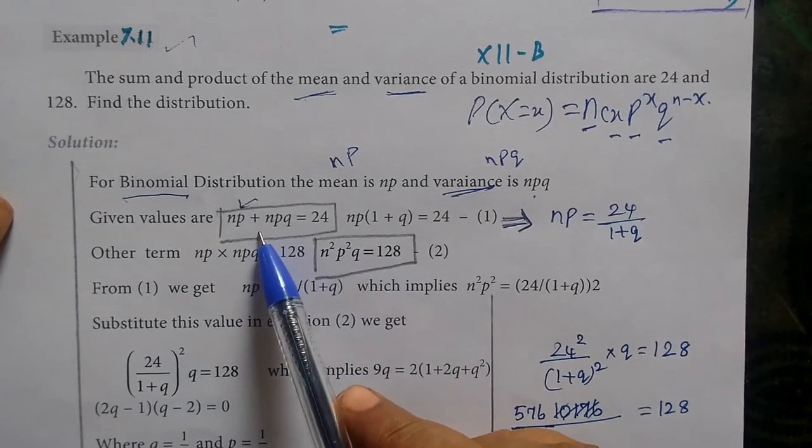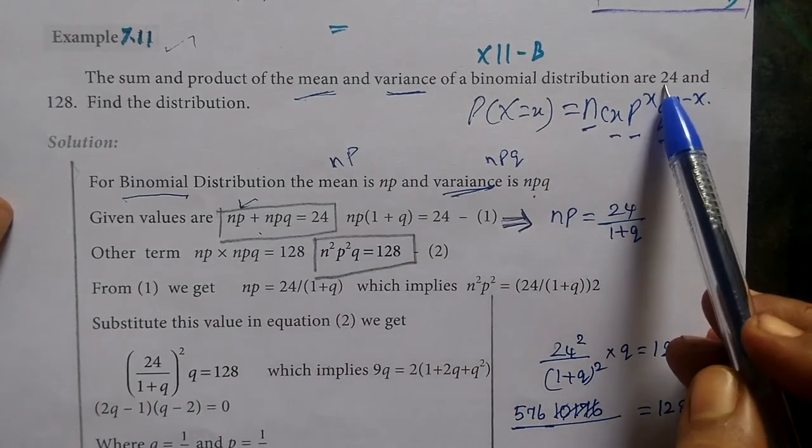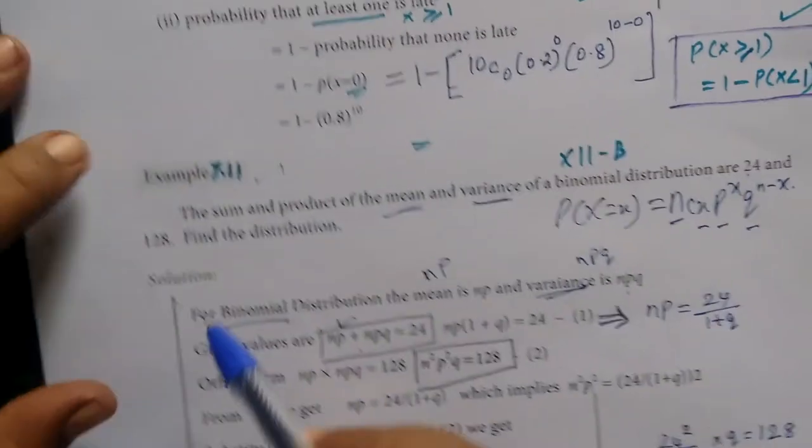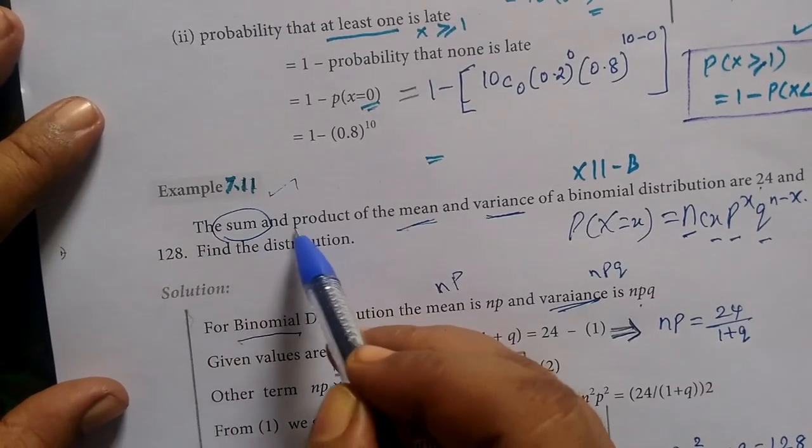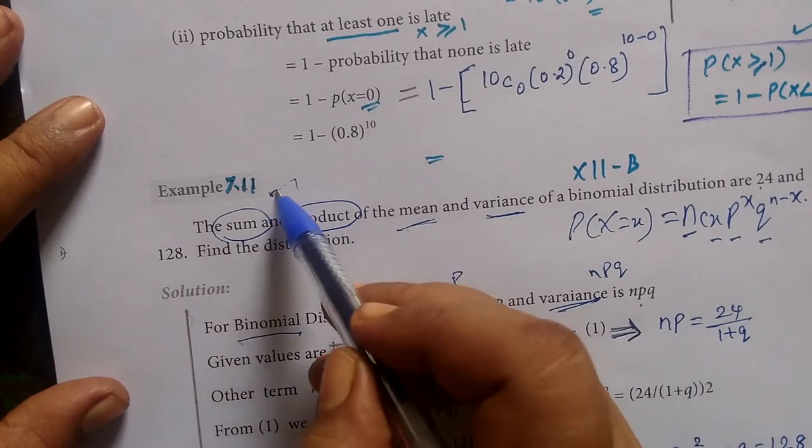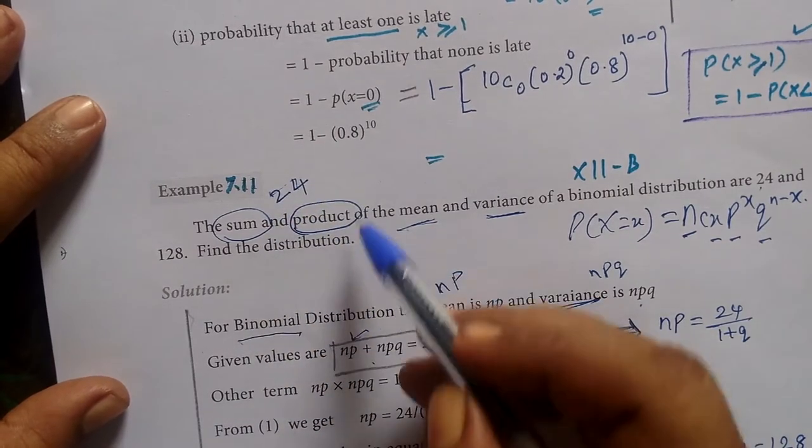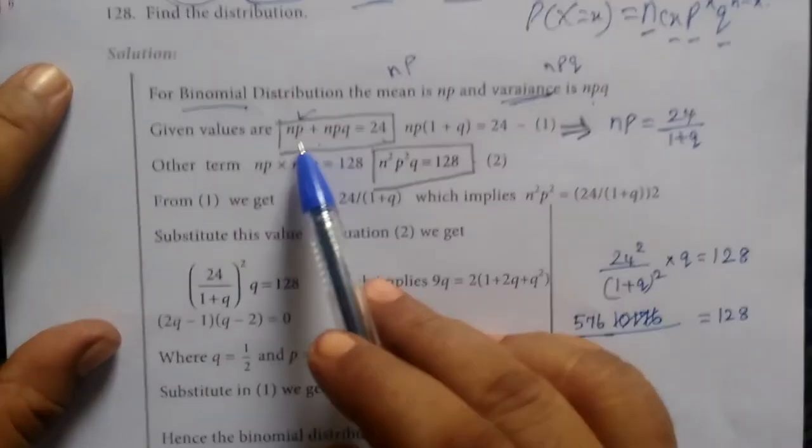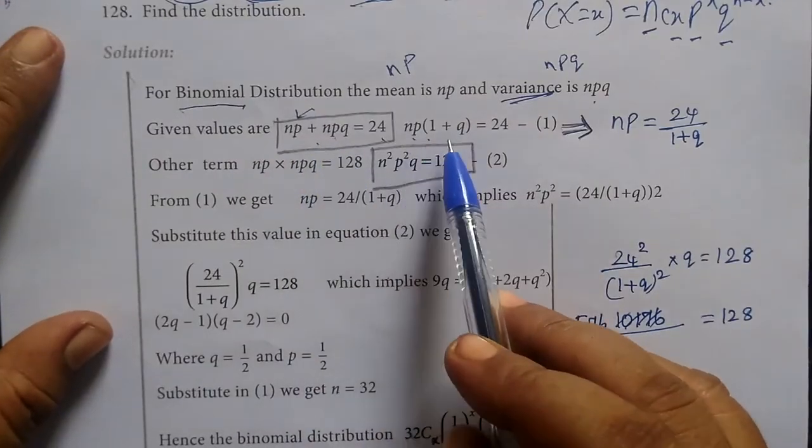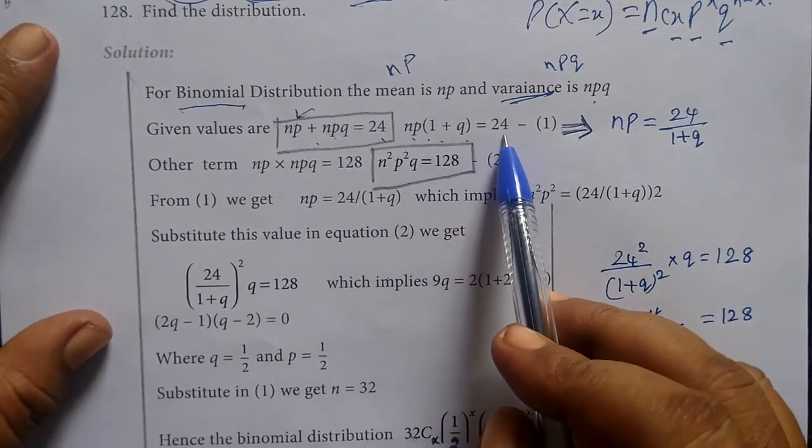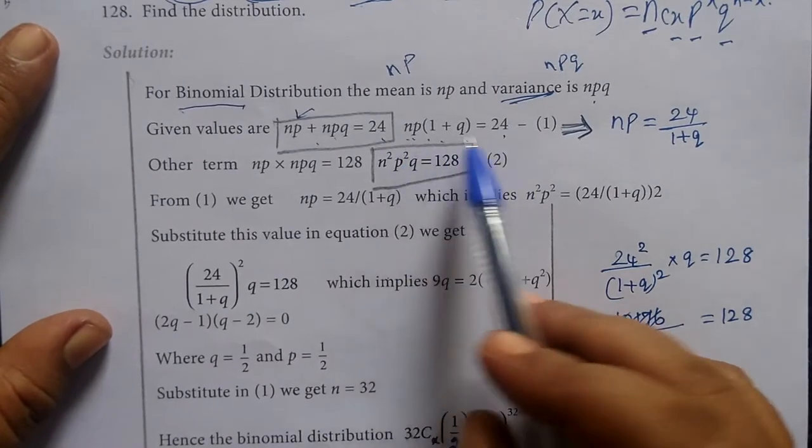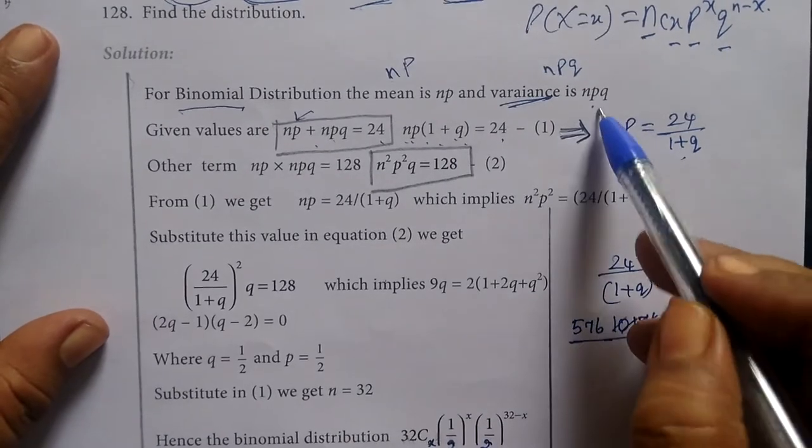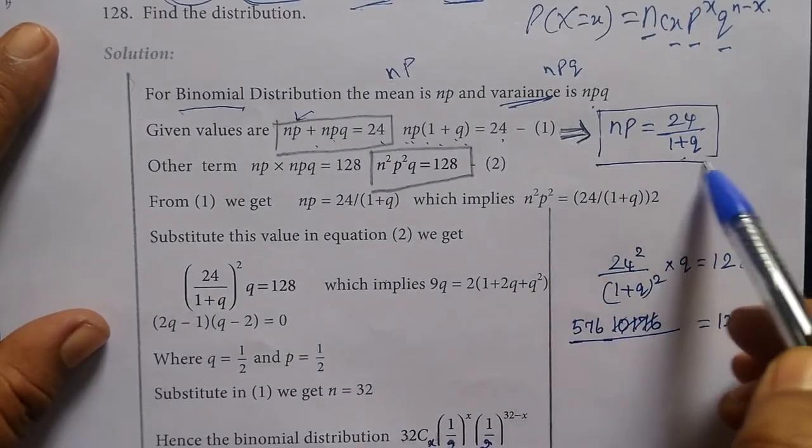Given that the sum is 24, that's the sum and product. Sum is 24, then product is 128. So if you take np plus npq is 24, then np times 1 plus q equals 24.